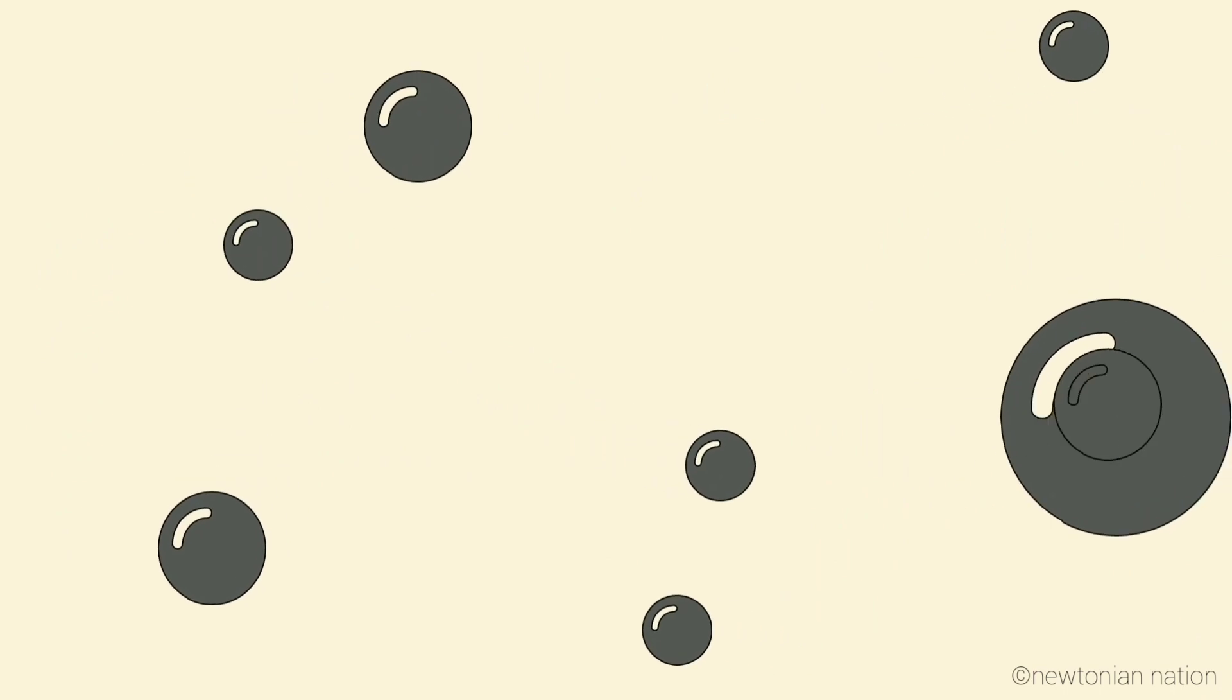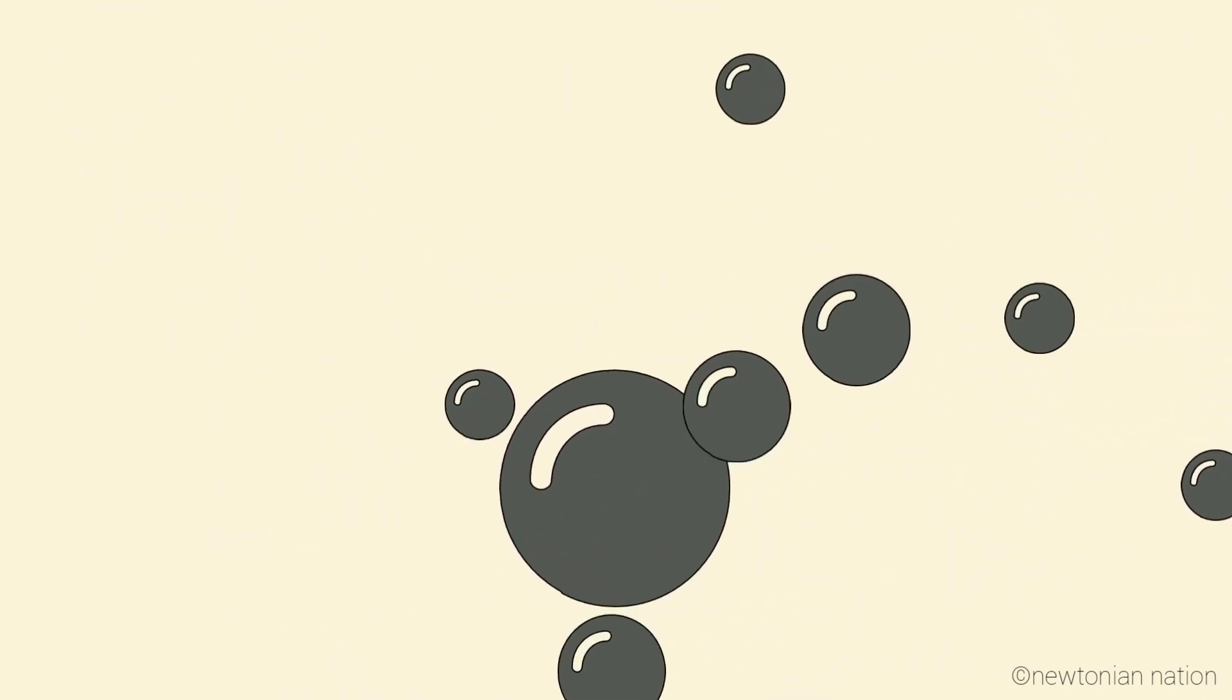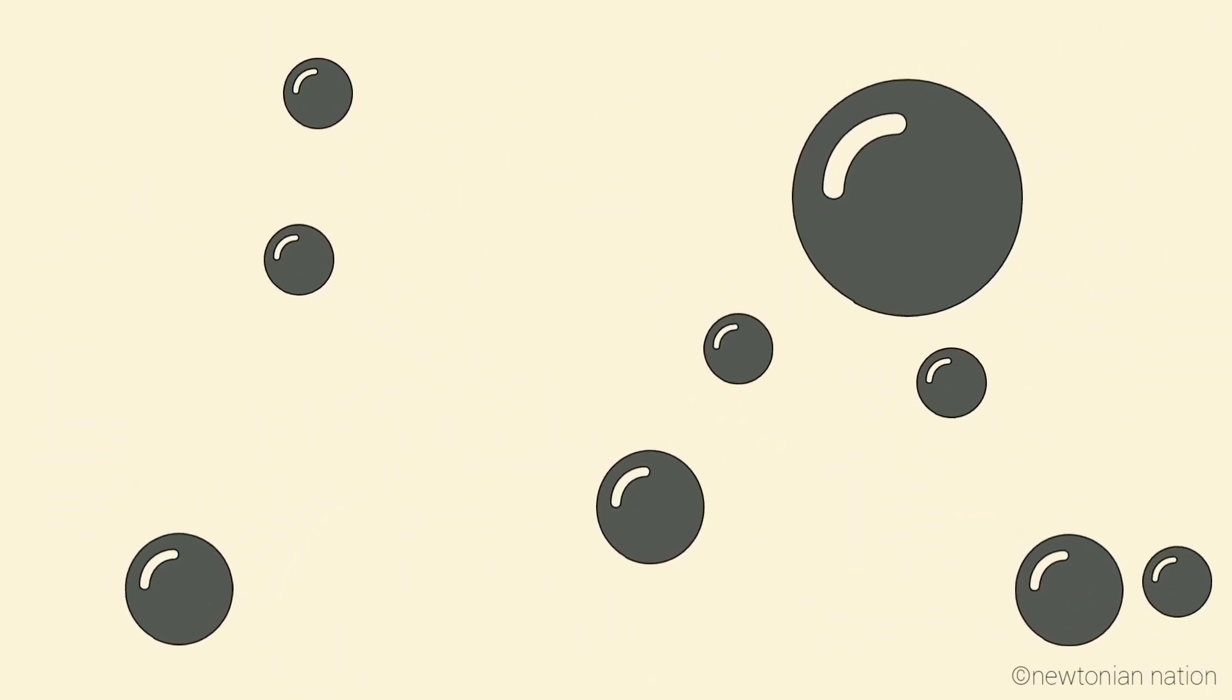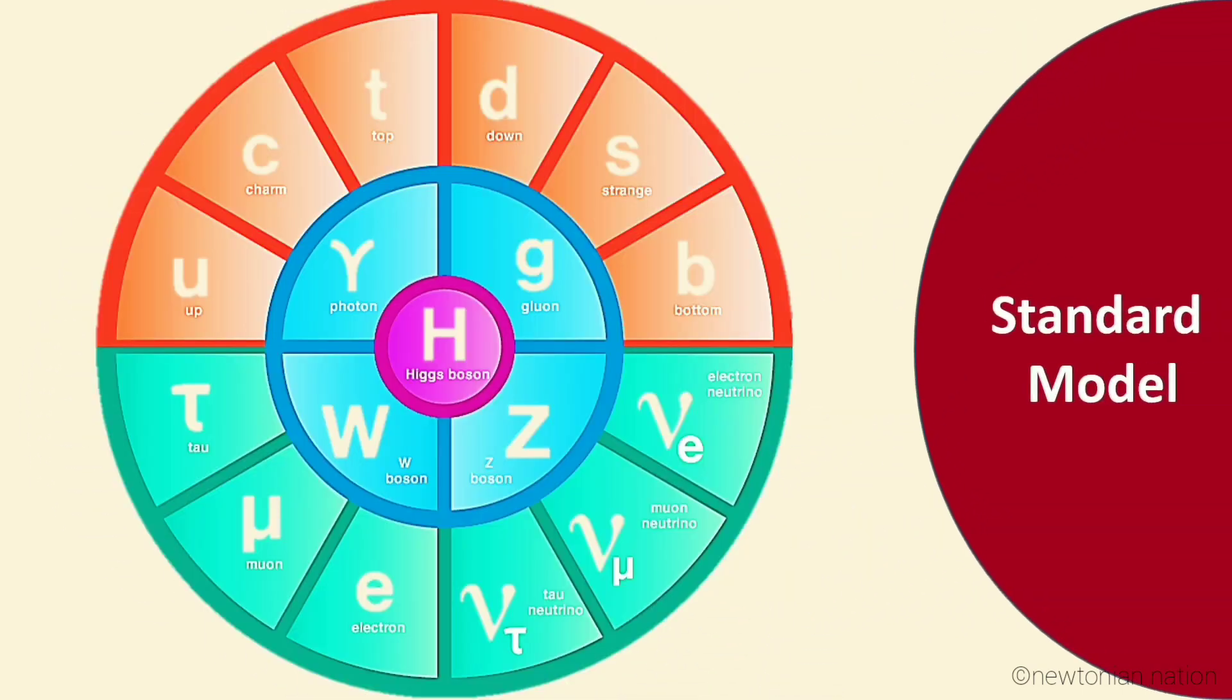All these particles are detected in sophisticated particle accelerators. Each subatomic particle differs from one another. In order to understand all the particles, scientists need a model which explains them all. That model is known as the Standard Model.